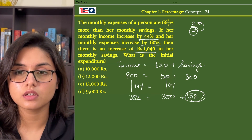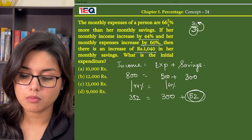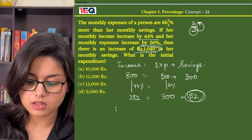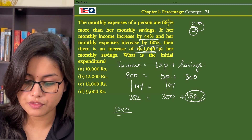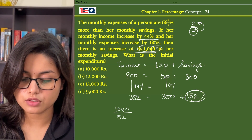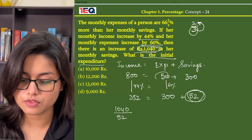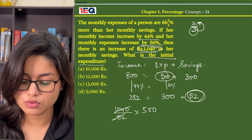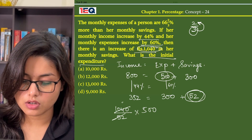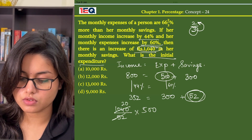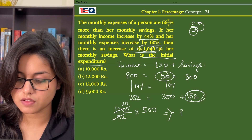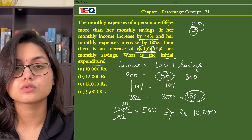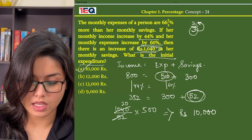According to the question, her savings increase by 1040. That means 1040 is the value of 52 units. So the multiplier is 20 (since 52 × 20 = 1040). We are asked to find the initial expenditure, which is 500 units. So 20 × 500 gives us Rs. 10,000. The answer to this question is option A.